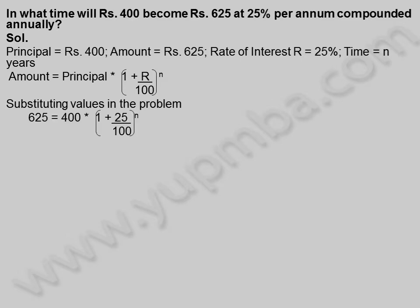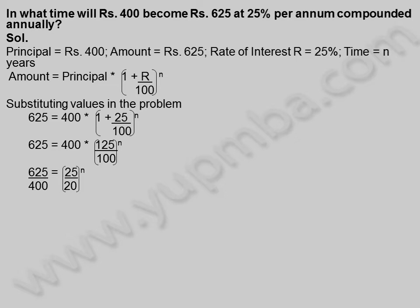Substituting values: 625 is equal to 400 into 1 plus 25 by 100, whole power n. That gives 625 is equal to 400 into 125 by 100, whole power n. So 625 by 400 is equal to 25 by 20, whole power n.